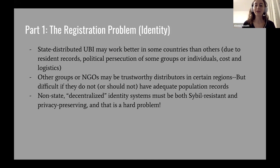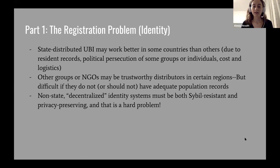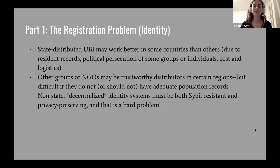The registration problem has to do with identity — how do you sign users up and make sure that each person gets one account and only one account? A state-distributed basic income might work better in some countries than others, and there's a problem if you want it to be equal all over the world in all different countries.